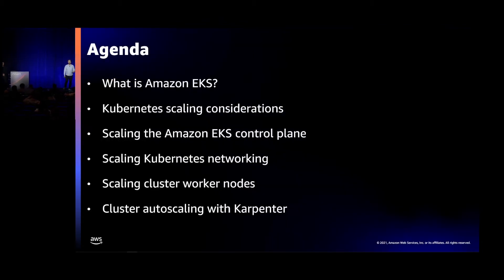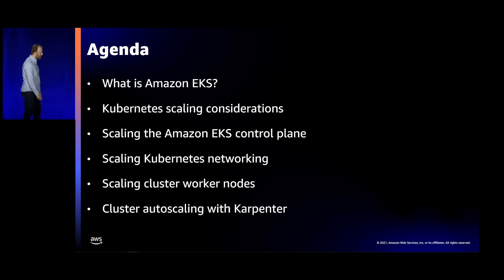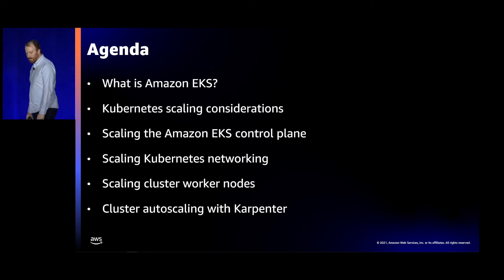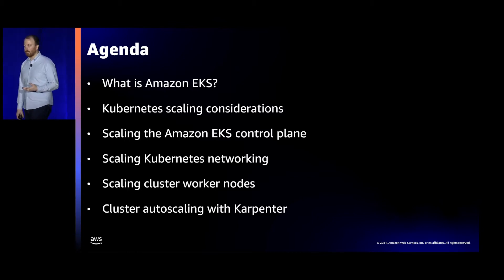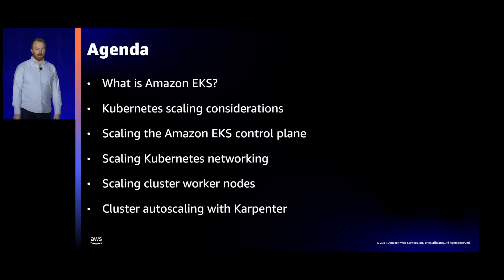I want to give a quick sense of what this talk is going to consist of. I'm going to describe a little bit of what Amazon EKS is, and then Shyam will dive into the scaling considerations you need to take into account when working with very large Kubernetes clusters, talking about scaling the EKS control plane, some of the work we've done internally, as well as Kubernetes networking scaling considerations. Finally, I'll talk about the Kubernetes cluster worker nodes and some features we've launched to enable larger clusters, and how to scale those nodes so they can grow and shift with your workloads as demand changes.